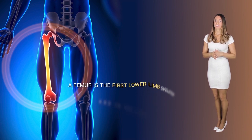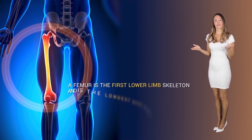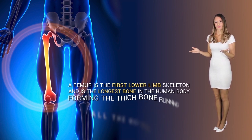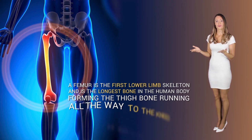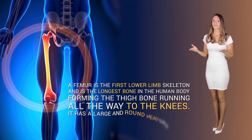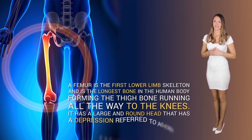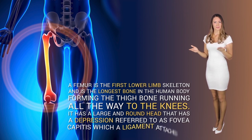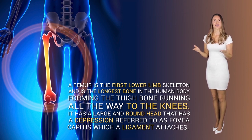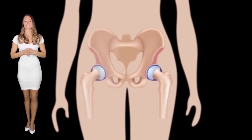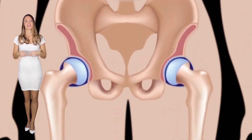The femur is the first lower limb bone of the skeleton, and it is also the longest bone in the human body, forming the thigh bone, running all the way to the knees. It has a large round head that has a depression referred to as fovea capitis, which a ligament attaches to. The head articulates with the acetabulum of the pelvic bone.